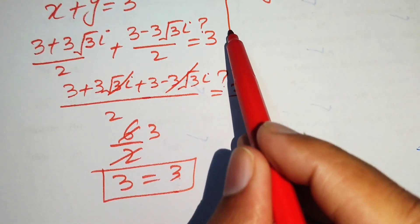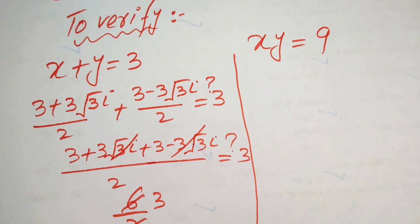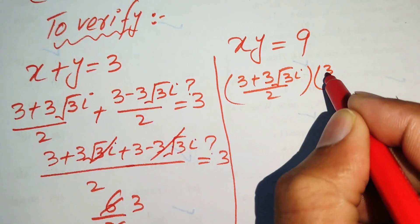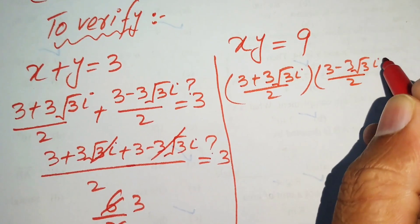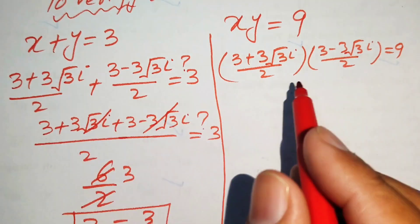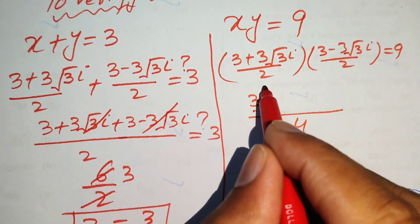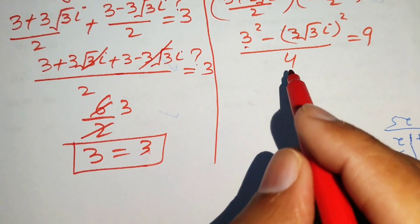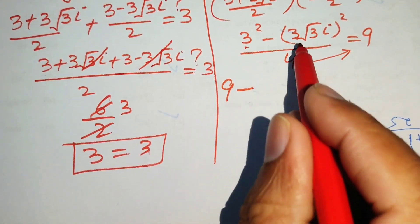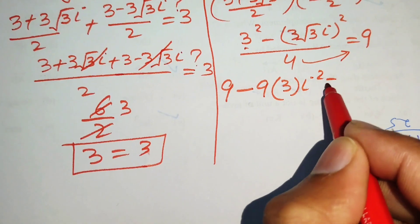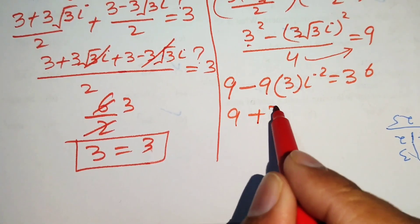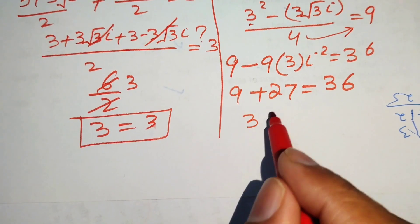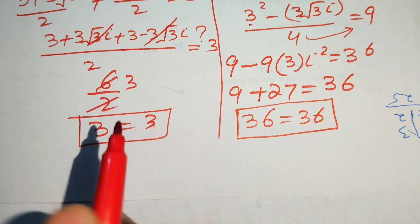Now we verify the second equation x times y equals 9. Multiplying (3 plus 3 root 3 iota) divided by 2 and (3 minus 3 root 3 iota) divided by 2, we get (3 squared minus (3 root 3 iota) squared) divided by 4. This gives (9 minus 9 times 3 times iota squared) divided by 4, which equals (9 plus 27) divided by 4, since iota squared equals minus 1. So 36 divided by 4 equals 9, confirming left-hand side equals right-hand side.